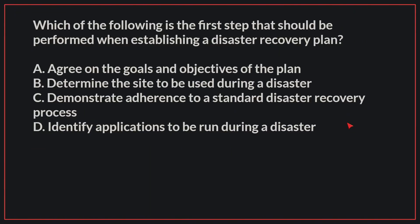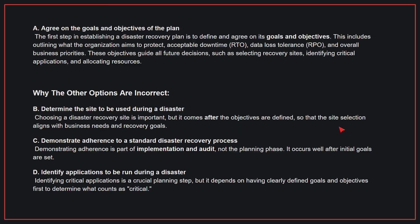Which of the following is the first step that should be performed when establishing a disaster recovery plan? The correct answer is A: Agree on the goals and objectives of the plan. The first step in establishing a disaster recovery plan is to define and agree on its goals and objectives.